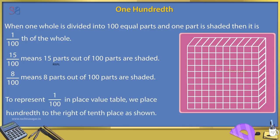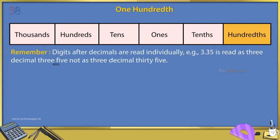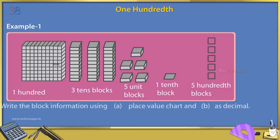In the place value table, we have: 1000s, 100s, 10s, 1s, tenths, hundredths. Remember, digits after decimals are read individually. For example, 3.35 is read as 'three point three five', not as 'three point thirty-five'.